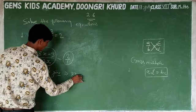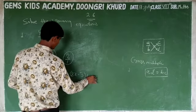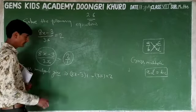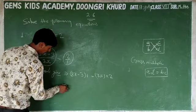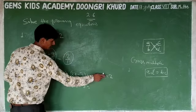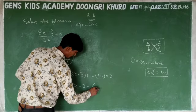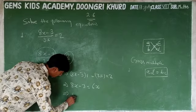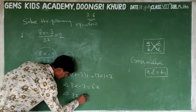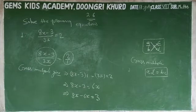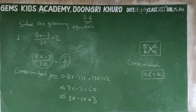We know that 8x minus 3 multiplied by 1 is equal to 3x multiplied by 2. This means 8x minus 3 equals 6x. Then we rearrange: 8x minus 6x equals 3.